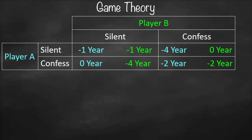If player A stays silent and player B confesses, player A will spend four years in prison while player B goes free with zero years. Conversely, if player A confesses and player B stays silent, player A spends zero years in prison while player B spends four years.